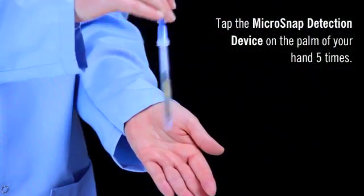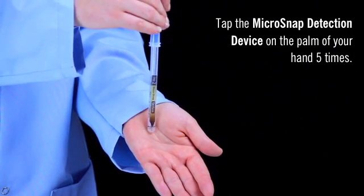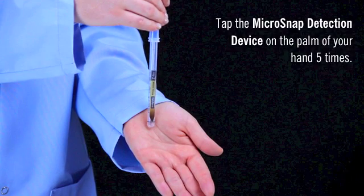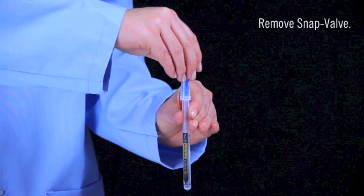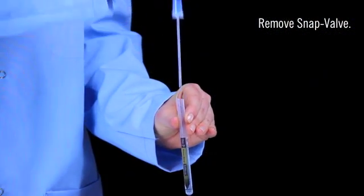Holding the swab upright, tap the detection device on the palm of your hand 5 times. This will bring droplets of chemistry to the bottom of the tube. Remove the snap valve from the detection device tube.